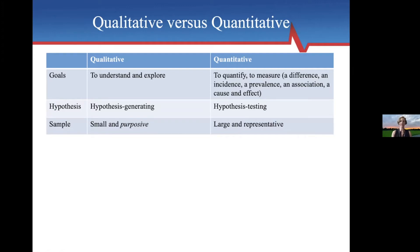What does sample size look like in qualitative versus quantitative? For qualitative, the sample is going to be on the smaller side and it's purposive or purposeful. You think to yourself, who do I need to talk to in order to really explore this topic? If I talk to all women, would that be a problem? Do I need to include men? If I talk to all ED nurses, am I missing a perspective? Whereas with many quantitative studies, we talk about having a large and representative sample.